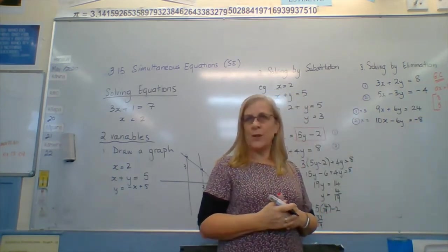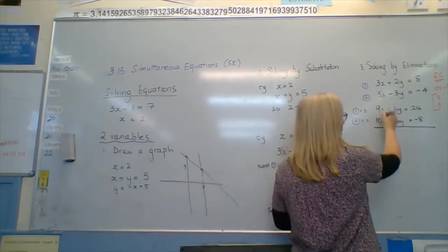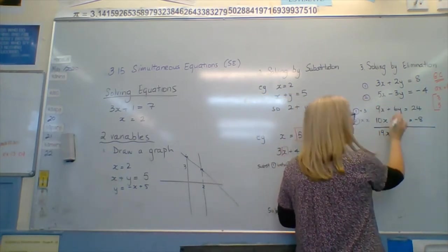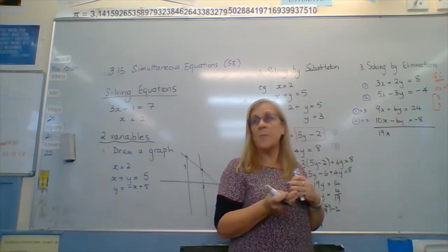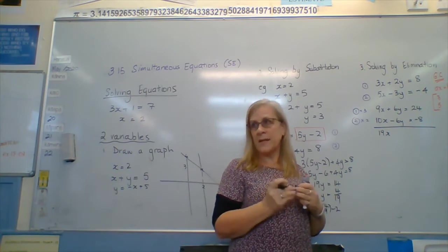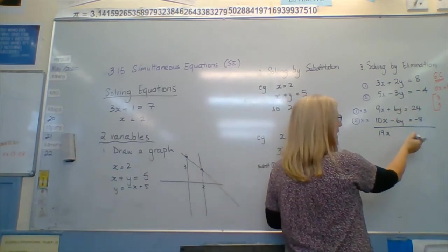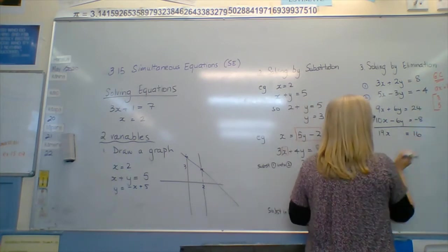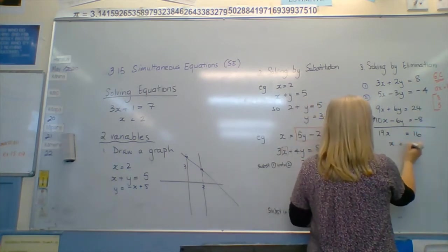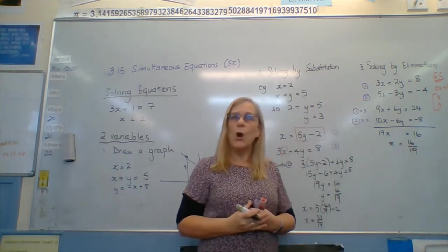Now I'm just going to add those together. So I've got 19x. I want these to be different signs. So if they had been the same sign, I probably would have multiplied one of them by a negative. 6y minus 6y is nothing. 24 minus 8 equals 16. So therefore x is, I seem to like over 19 today, 16 over 19.